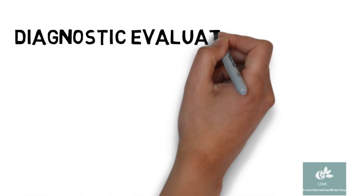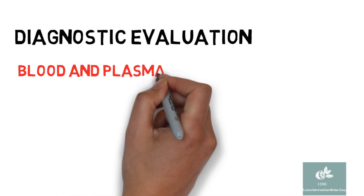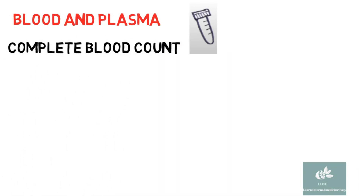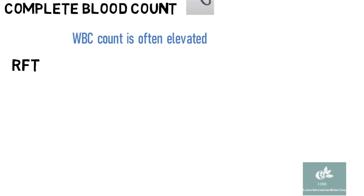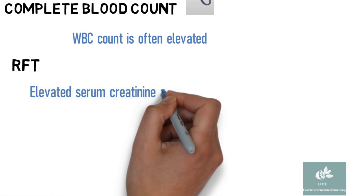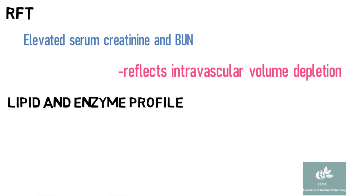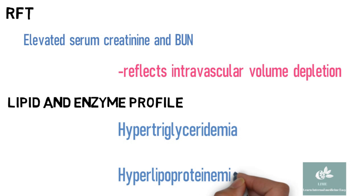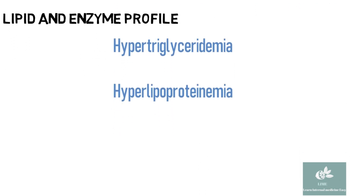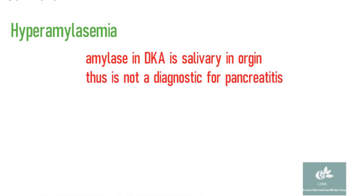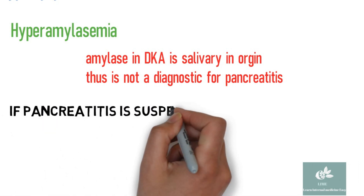Diagnostic evaluation in DKA — blood and plasma: in complete blood count, WBC count is often elevated. RFT shows elevated serum creatinine and blood urea nitrogen, reflecting intravascular volume depletion. Lipid and enzyme profile shows hypertriglyceridemia, hyperlipoproteinemia, and hyperamylasemia. Amylase in DKA is of salivary origin and thus not diagnostic for pancreatitis; if pancreatitis is clinically suspected, CECT and serum lipase should be done.